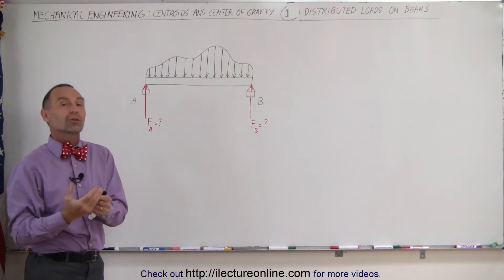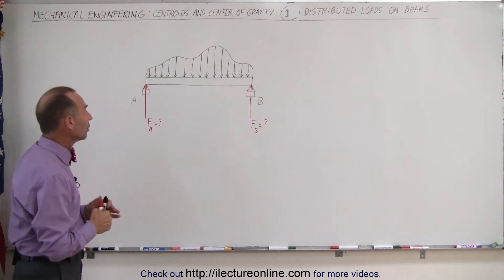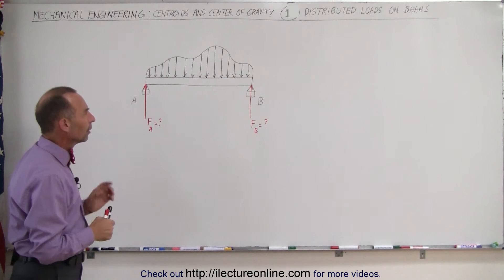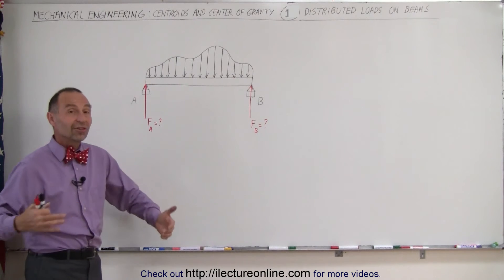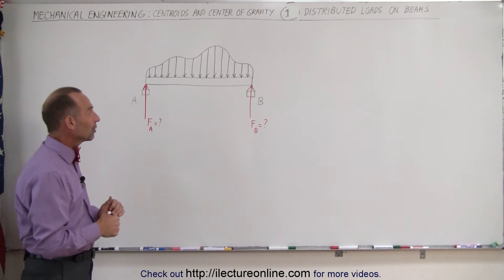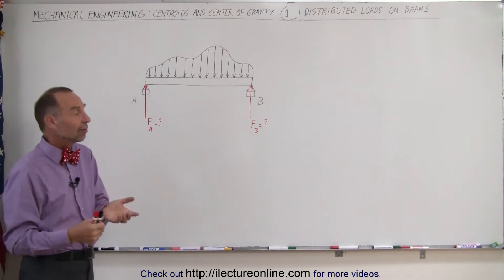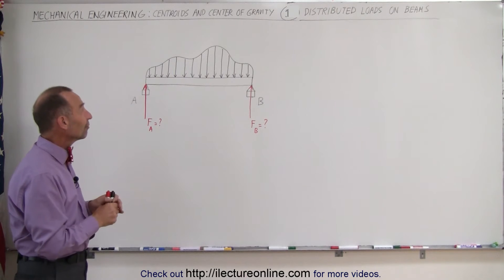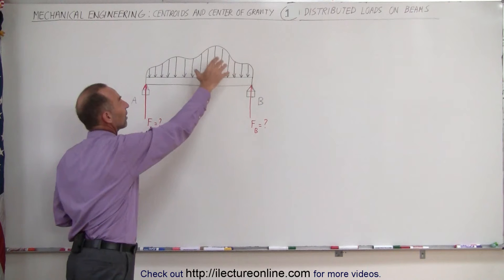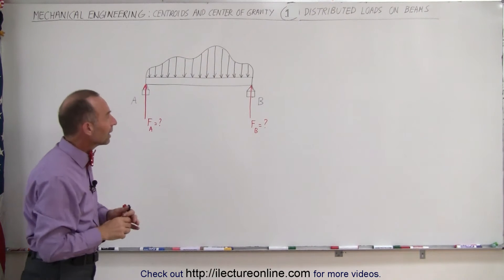In some cases a moment is created and then we also have to find a moment about some point. The way this can be done, since this is the chapter where we talk about the center of mass and the centroid, is to find where the centroid of the forces acting on the beam is actually located.